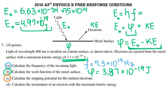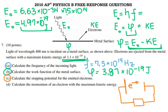For the next question, they ask you to calculate the stopping potential for the emitted electrons. The stopping potential is the voltage difference needed to stop electrons from crossing from the metal surface to the other plate. Think of it as a circuit where electrons are emitted and try to create a current — you apply a voltage to stop them from reaching the other side.